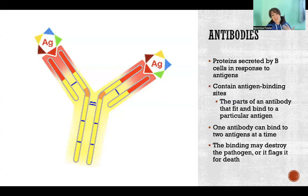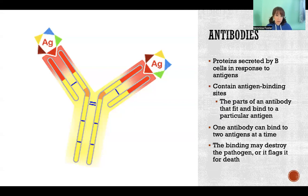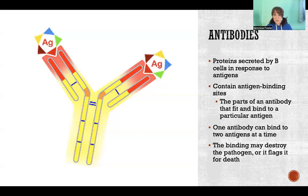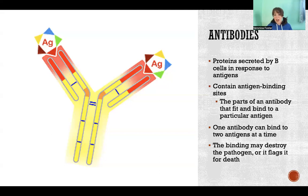Often they don't actually kill the pathogen directly, but it does put a flag on it so that any other cell passing by knows this is bad and should kill it. Even parts of our innate immune system that maybe wouldn't normally attack that particular pathogen — when they're passing by and see that it's been flagged by antibodies, they recognize it as foreign and go destroy it. That's how antibodies actually work.